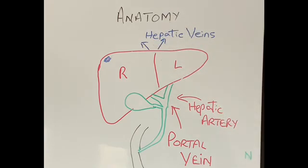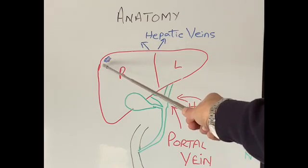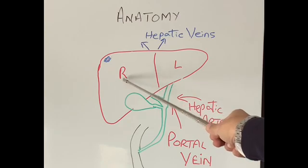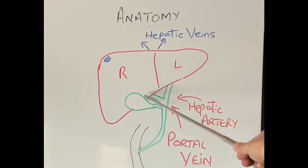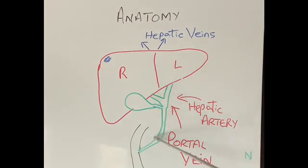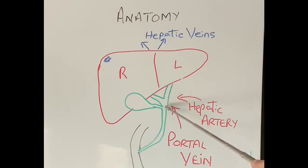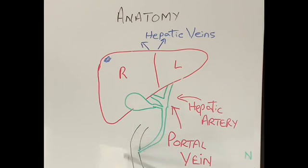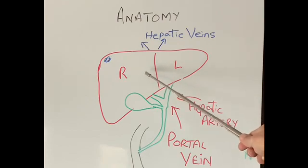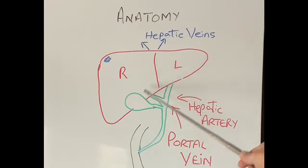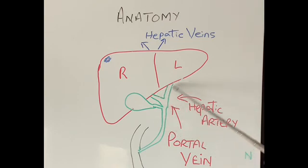The ducts inside the lobules join into bigger ducts — again like branches of a tree — and eventually come out of the liver as the two hepatic ducts. From the side the gallbladder joins in, and together they form the bile duct, which eventually opens into the first part of the small intestine called the duodenum. From here, the bile produced by the liver — containing waste products the liver has filtered out — passes through the bile duct into the small intestine to help digest our food, especially fats.